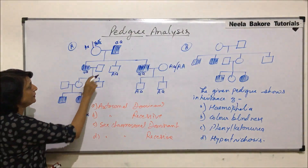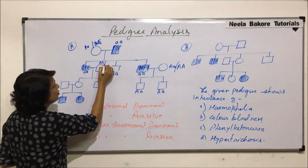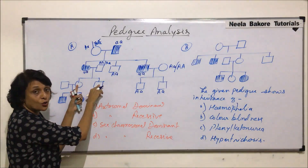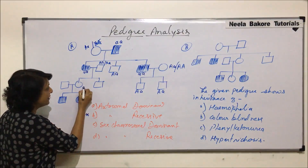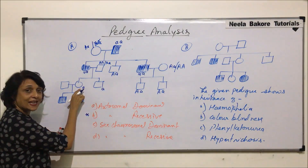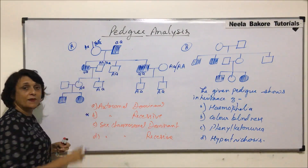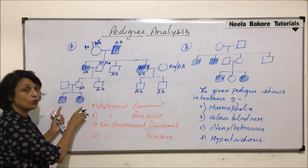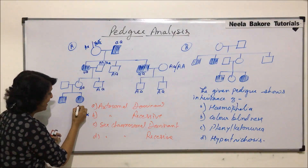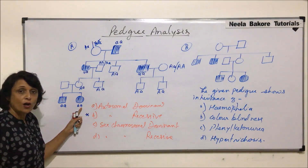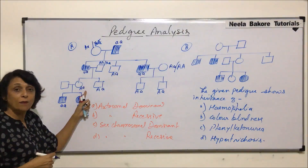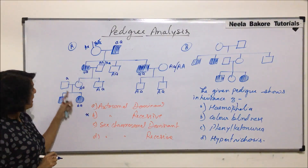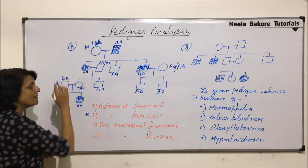For the unaffected man who married into the family, he can be homozygous dominant or heterozygous. Both his children are unaffected but have received the recessive gene from their mother. Since they are not showing the trait, they must have received one dominant allele from the father. When the affected daughter marries a normal man and both their children show the disease, their genotype must be recessive.